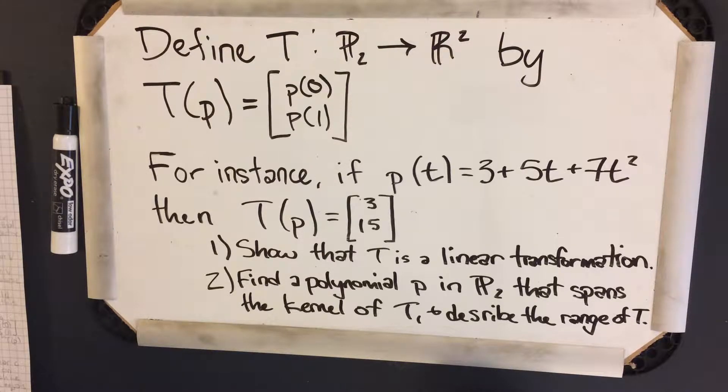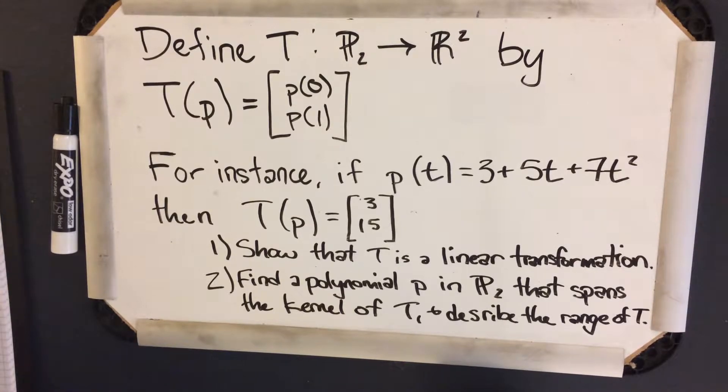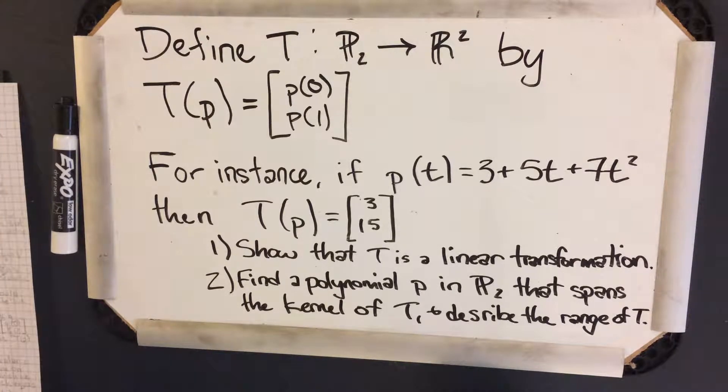So this first question, show that T is a linear transformation, they actually give us a hint for, and we'll take that in just a second. The second part is the question, find a polynomial p in P₂ that spans the kernel of T, and describe the range of T. So we'll come back to that in just a minute, but show that T is a linear transformation.